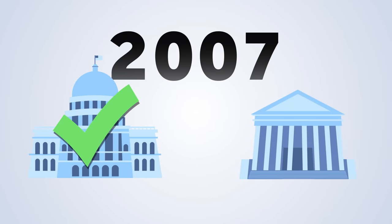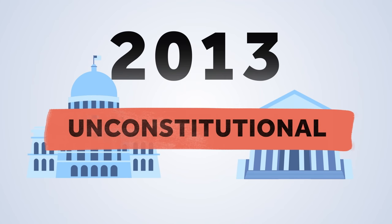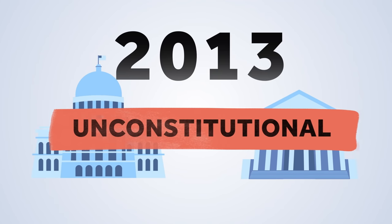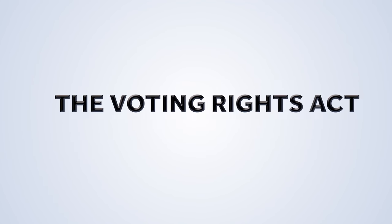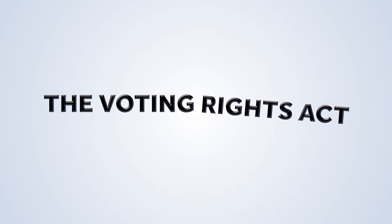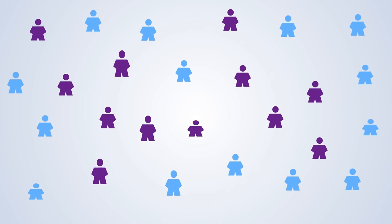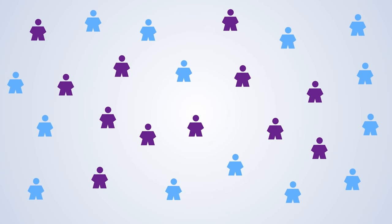Then the Supreme Court decided in 2013 in Shelby v. Holder that the federal government overseeing certain jurisdictions' election laws was unconstitutional. Despite that decision, the bulk of the protections from the Voting Rights Act remains in place. However, states still find ways to use redistricting to keep minority communities from having fair representation.